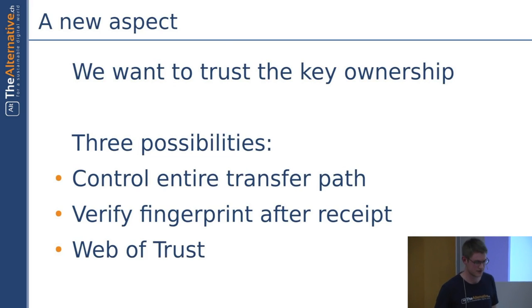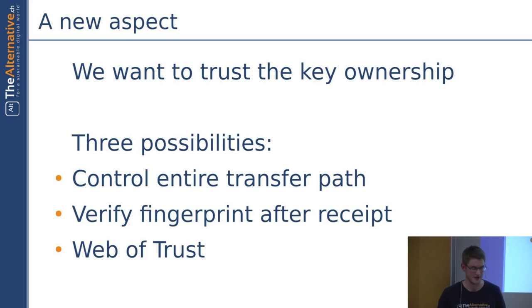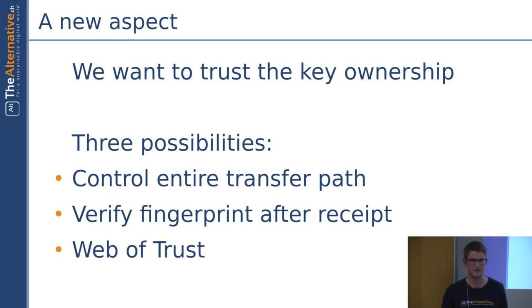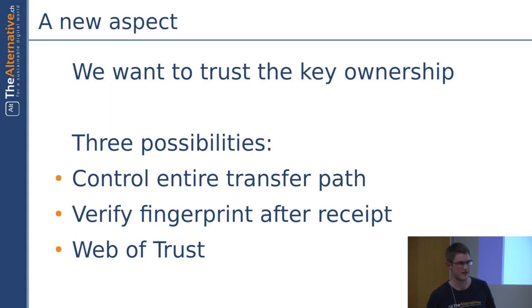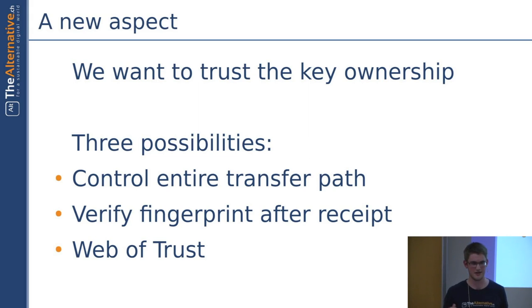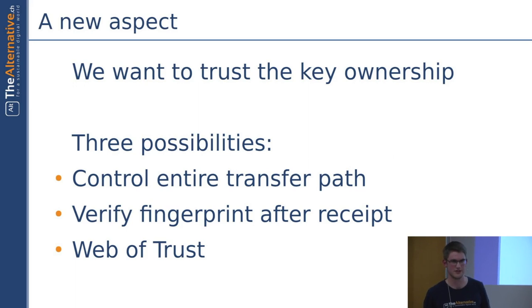This new aspect is what we call the trust in the key ownership, and there are three ways to attain it. The first one is we control the entire transfer path — I hand the USB key to the other person and see that he obtains the key and nobody will interfere in the transmission. This is obviously only possible if you're able to meet in person. The second way is to verify the fingerprint after receiving. The fingerprint of a key is a number obtained by compressing your key into a very compact format — you could call the other person by phone, recognize their voice, read out your own fingerprint, and the other person can verify that the fingerprint matches with the one they have on the hard drive. The third option is the web of trust.